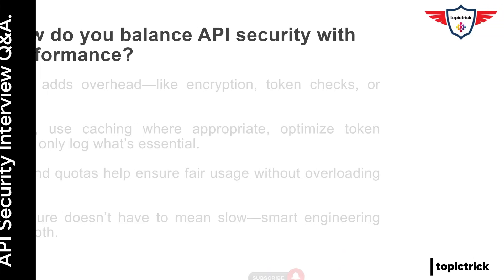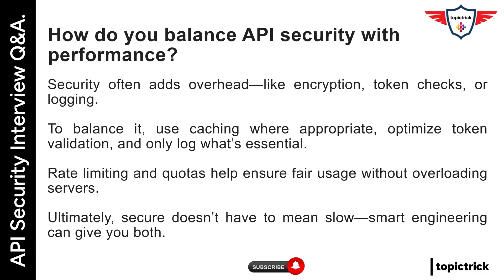And here's our final question: How do you balance API security with performance? Security often adds overhead like encryption, token checks, or logging. To balance it, use caching where appropriate, optimize token validation, and only log what's essential. Rate limiting and quotas help ensure fair usage without overloading servers. Ultimately, secure doesn't have to mean slow — smart engineering can give you both.